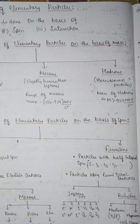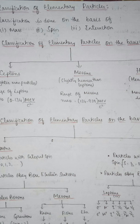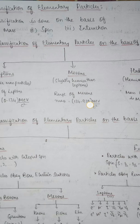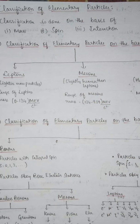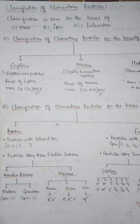The mass of the mesons lies between the leptons and the hadrons. Leptons are the lighter mass particles. This completes the classification of elementary particles based on mass.